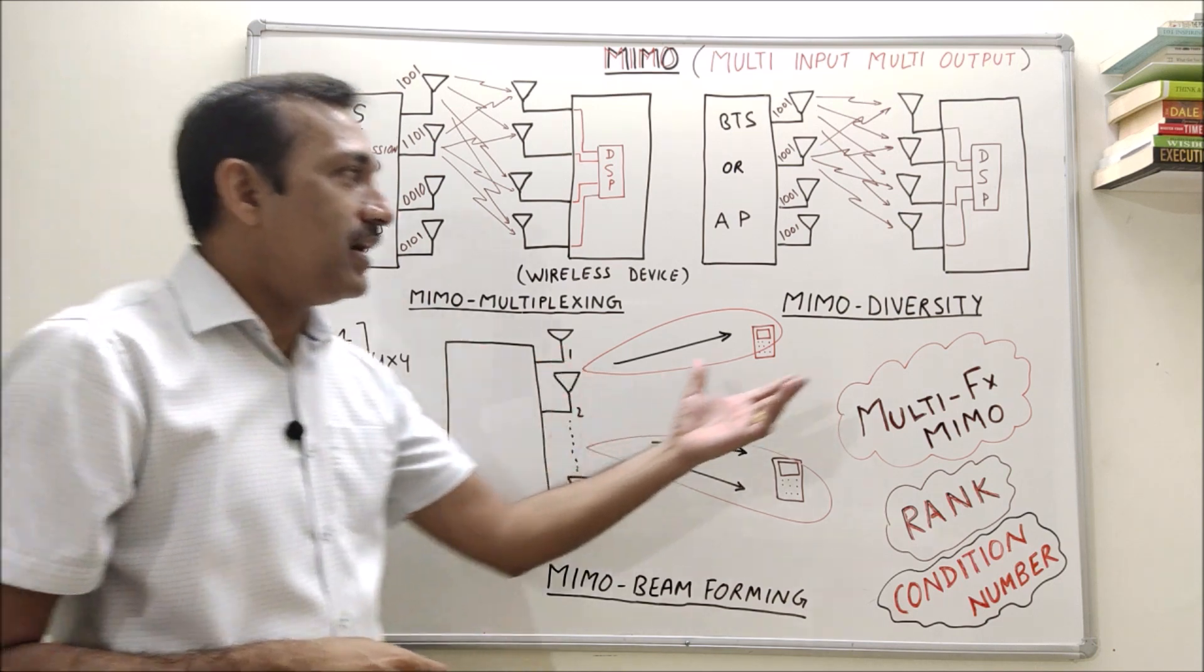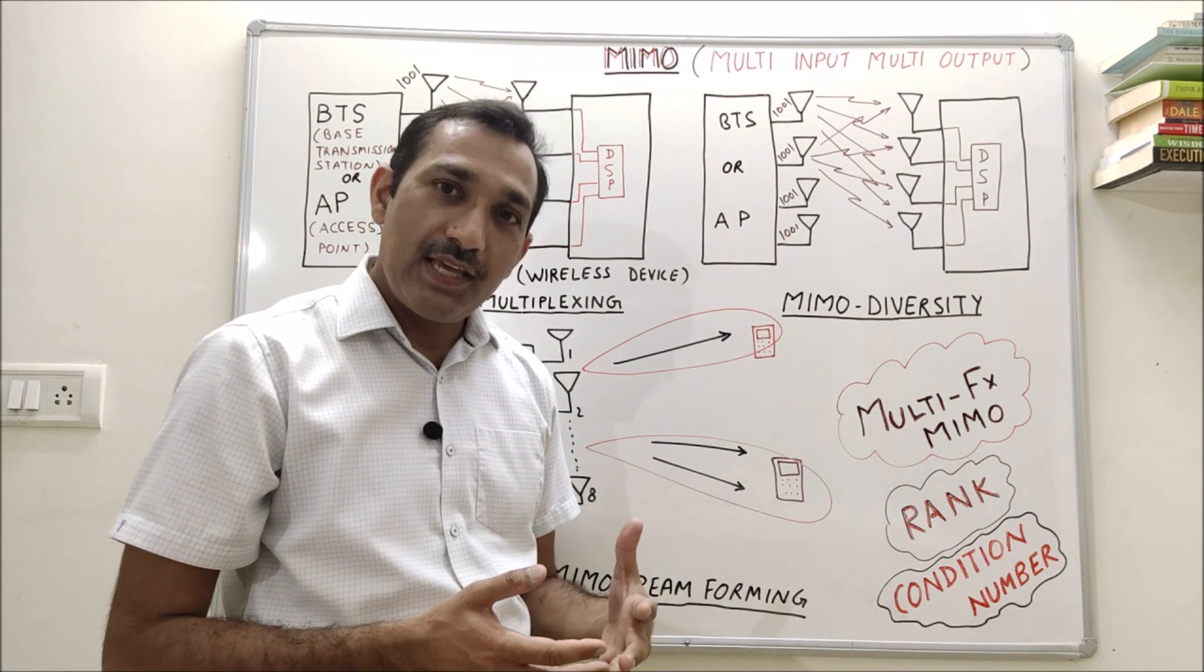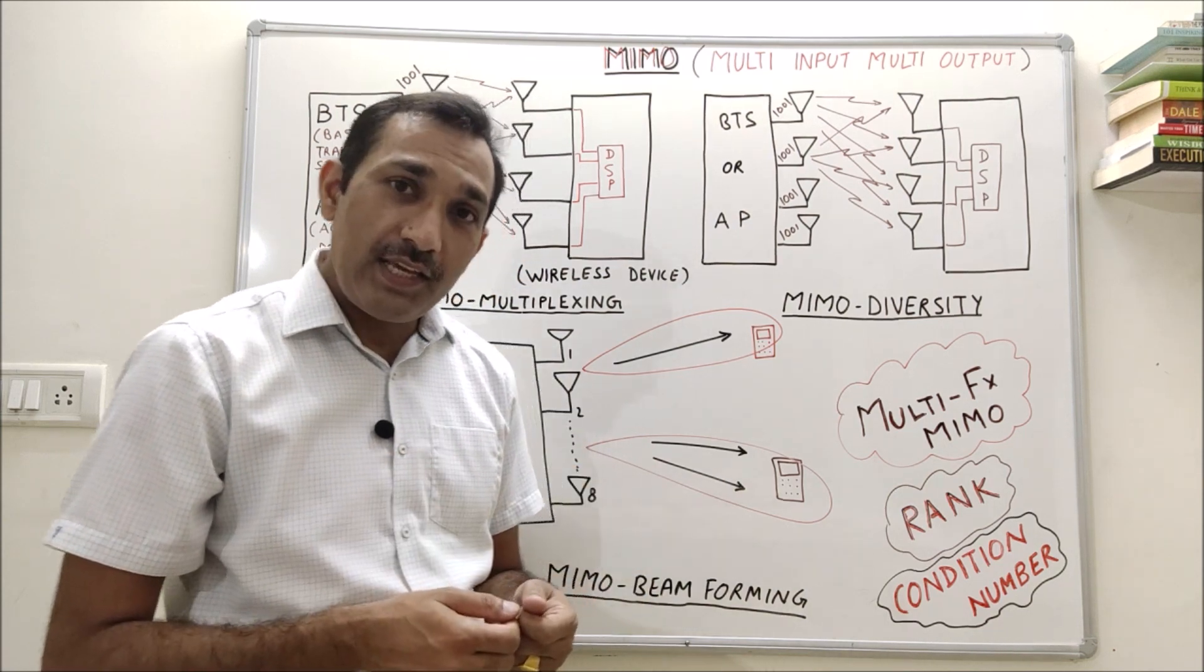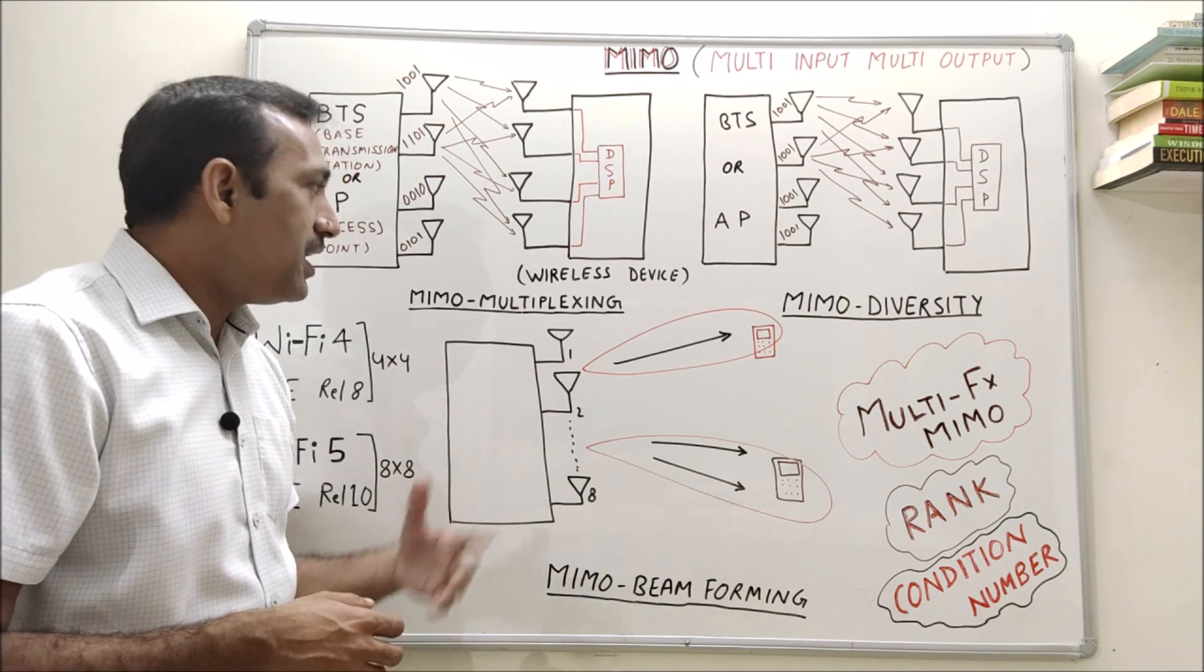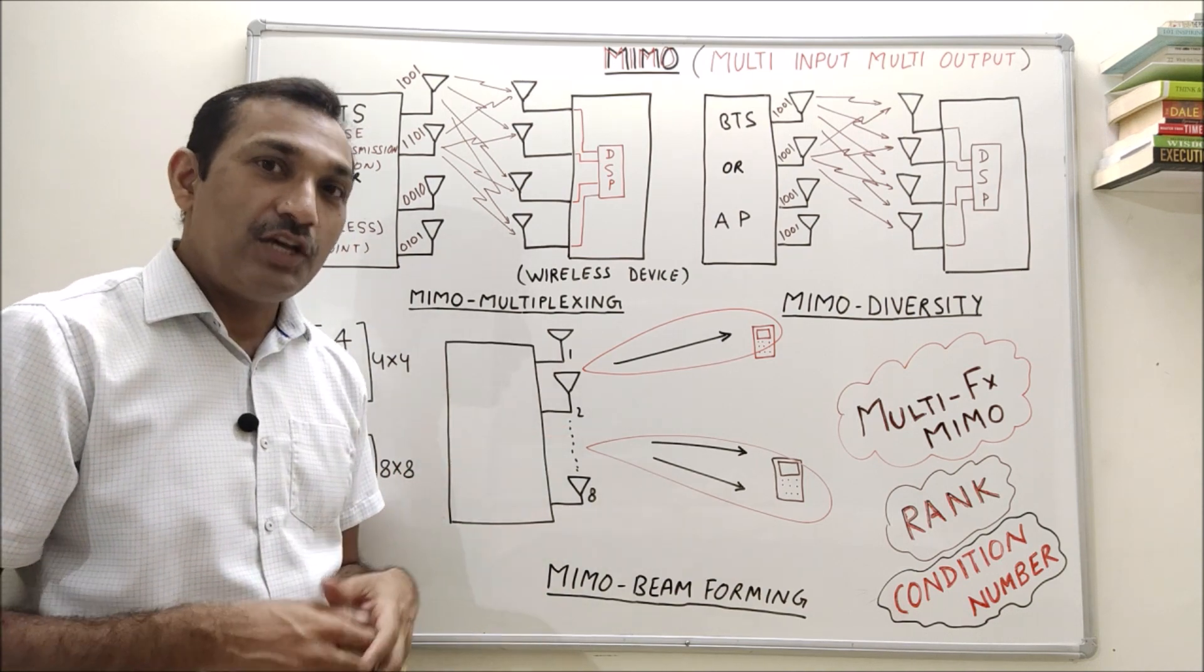MIMO can be used in different ways. One of them is multiplexing, another one is diversity. When we say diversity, that increases reliability of the data. And when we say multiplexing, that increases the throughput.